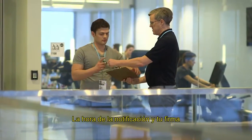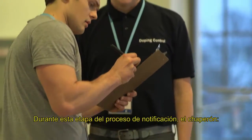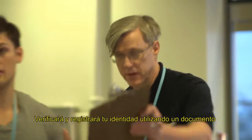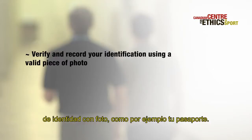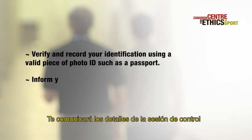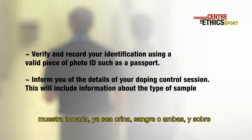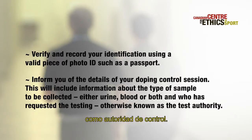The time of notification and your signature will be recorded on a form. During this part of the notification process, the chaperone will verify and record your identification using a valid piece of photo ID such as a passport, and inform you of the details of your doping control session. This will include information about the type of sample to be collected — either urine, blood, or both — and who has requested the testing, otherwise known as the test authority.